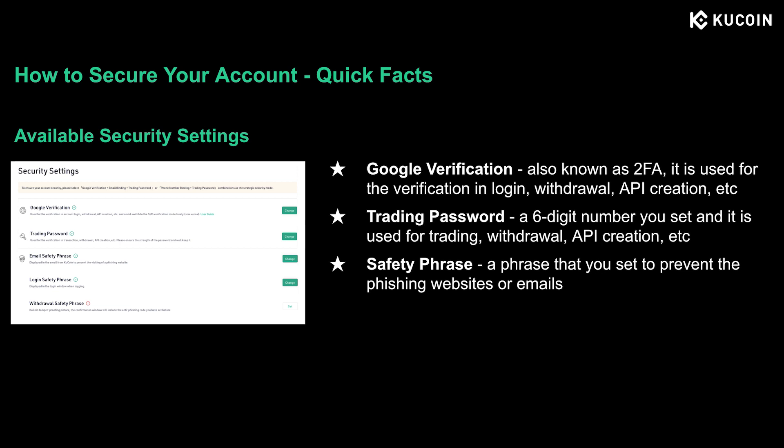First, let's look at what Google verification is used for. Google verification is also known as 2FA. It is used when you log into your account, withdraw assets, create APIs, etc. And trading password — most of us have used it before. It is a six-digit number and is used for trading, withdrawal, API creation, etc.